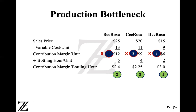B Rosa requires five bottling hours, C Rosa four, and D Rosa two. Dividing their contribution margins by the bottleneck hours gives $2.40 for B Rosa, $2.25 for C Rosa, and $3.00 for D Rosa. So D Rosa, which appeared to give the least profit in terms of contribution margin per unit, is actually the most profitable for the company. It gives the company $3 per bottleneck hour.